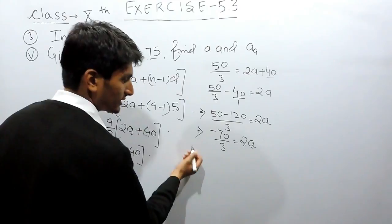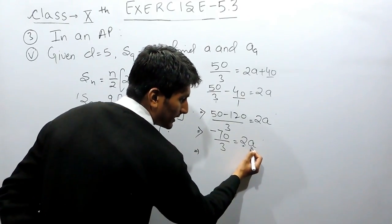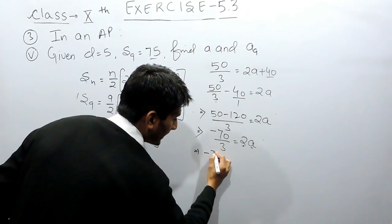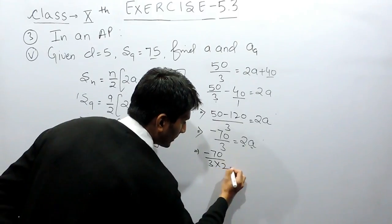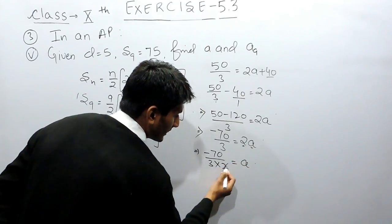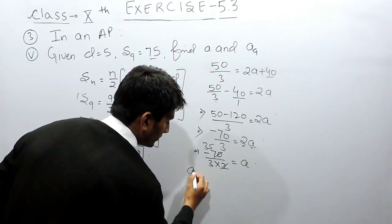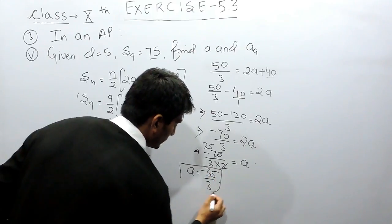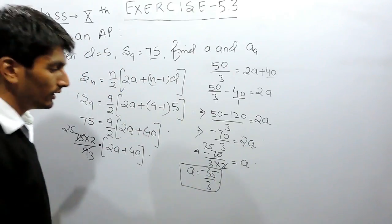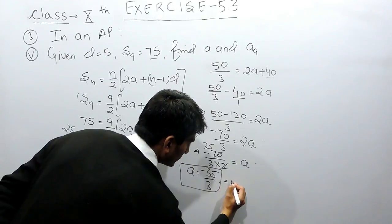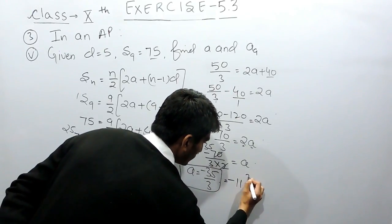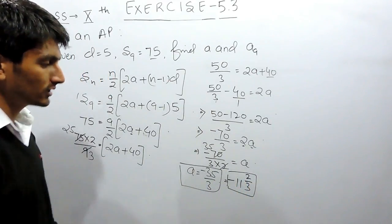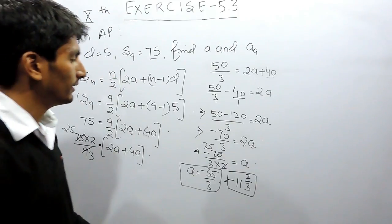Now shifting the 2 to the other side — since it is multiplied with a, it will divide — we get a equals minus 70 upon 3 divided by 2, which cancels to minus 35 upon 3. So the first term of this AP is minus 35 upon 3, which can also be written as the mixed fraction minus 11 and 2 upon 3.